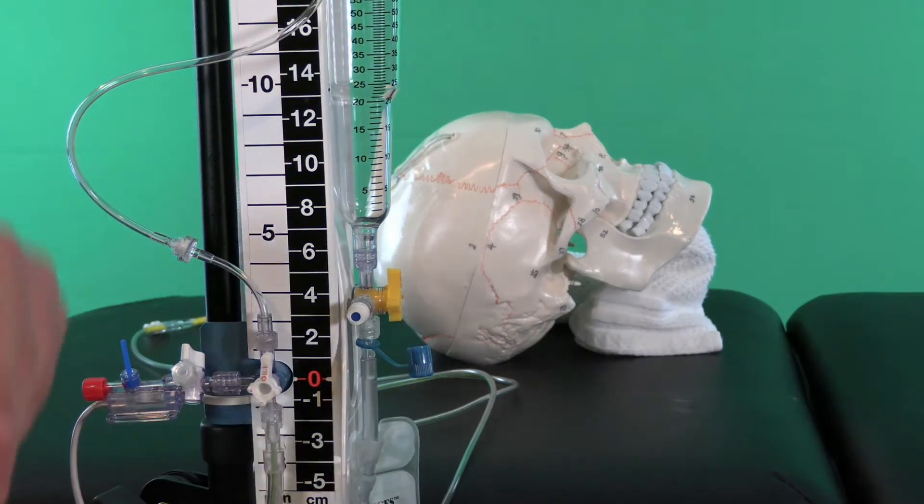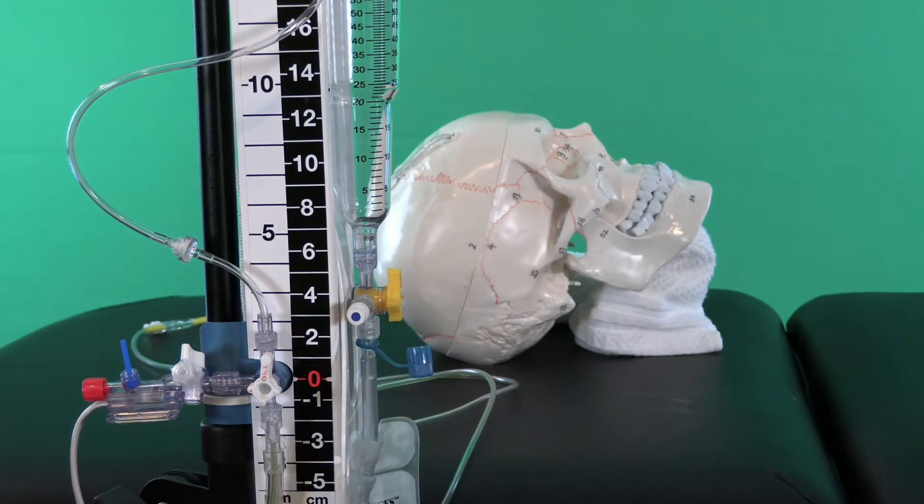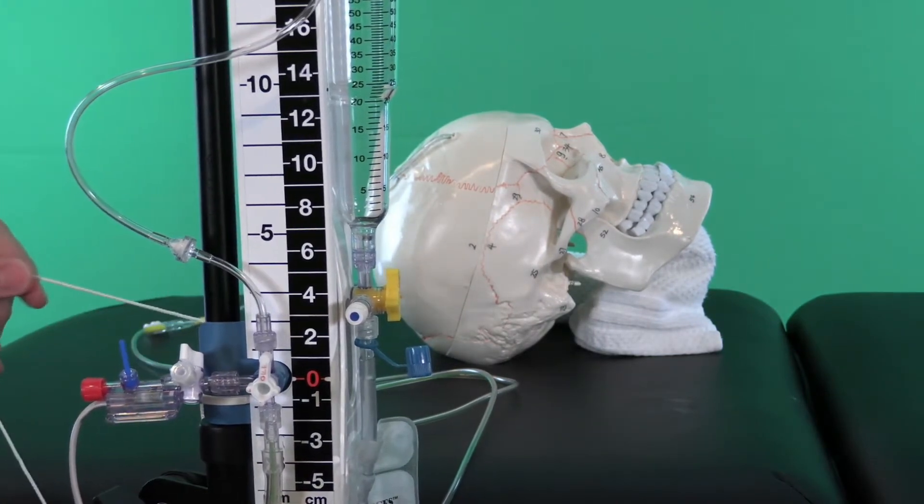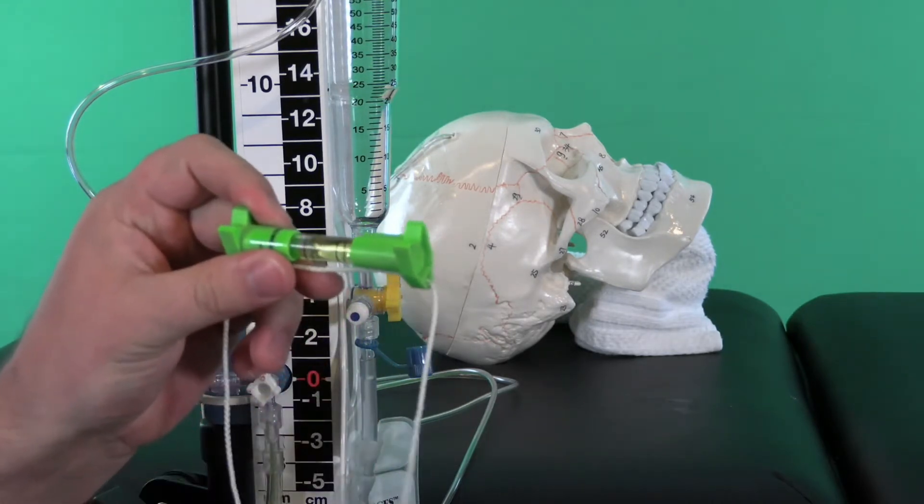There's actually a little level device that comes with it that's pretty cool. You can measure this—it attaches right where the transducer is. Then you can hold the other end up to the patient's tragus and make sure that it's level.